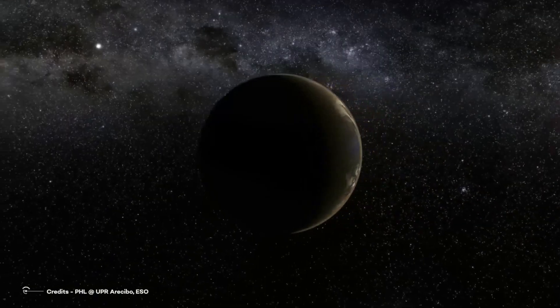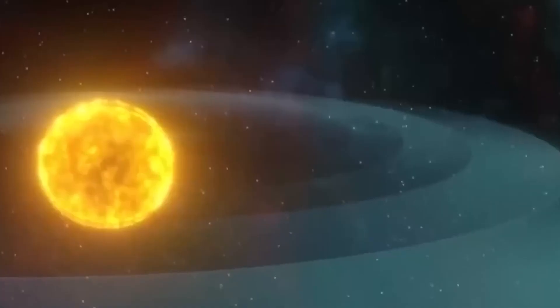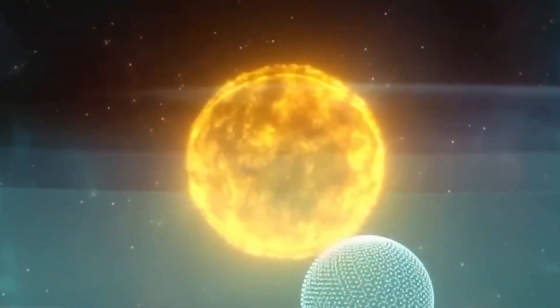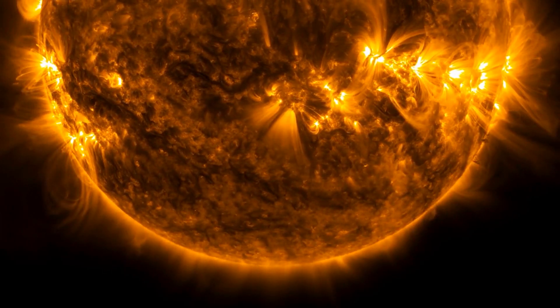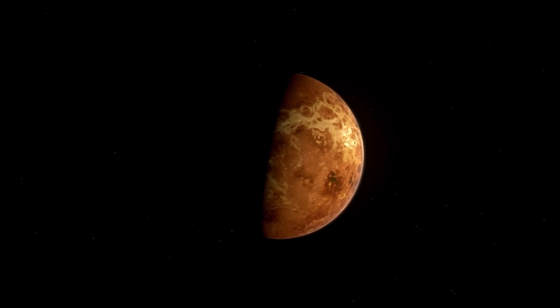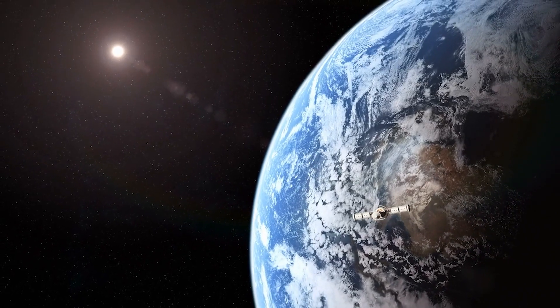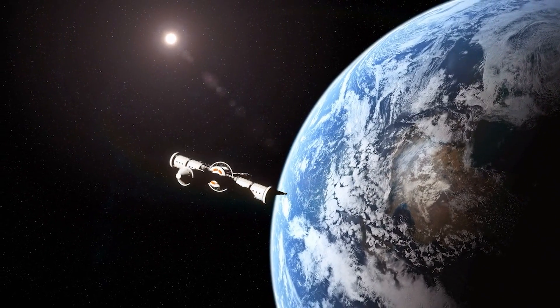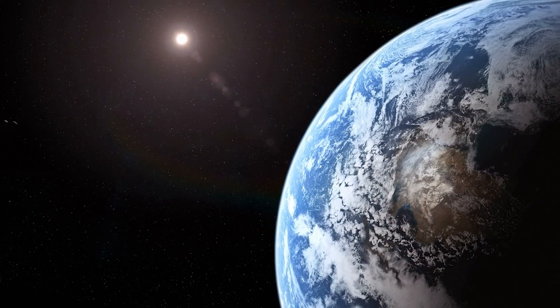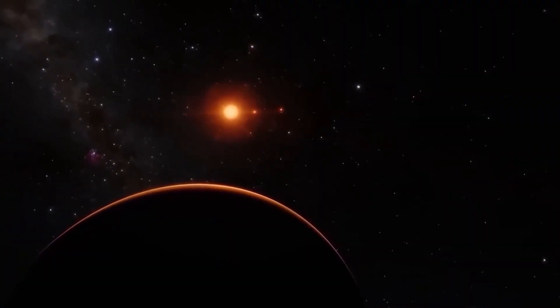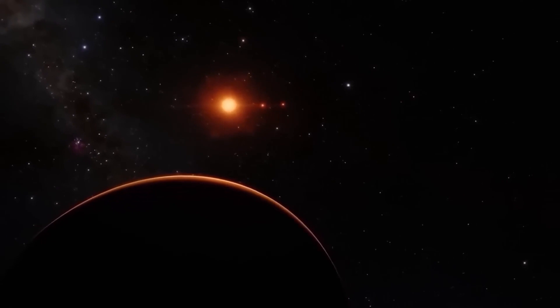Proxima b is a rocky world right in the habitable zone of the M-class red dwarf star, Proxima Centauri. That's just a mere 12% of the mass of our Sun. Proxima b, on the other hand, is more massive than our planet at about 1.6 Earth masses and 1.3 times our radius. It orbits Proxima Centauri in just 11.2 days, covering the distance of just 7 million kilometers. That's less than 5% of the distance at which Earth orbits the Sun.